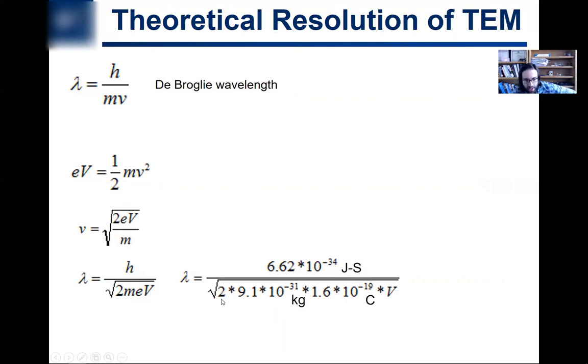Times now the charge of an electron - this e part. Electron volts means e times voltage, so charge of an electron 1.6 times 10 to the minus 19 coulombs times voltage. That's gonna get us an idea of what sort of voltage do we need to apply to our electron gun to get a certain wavelength.